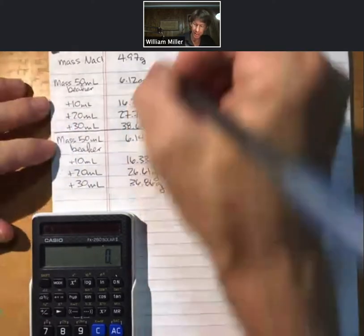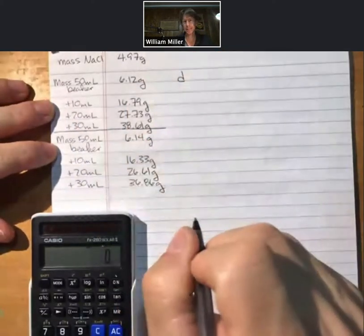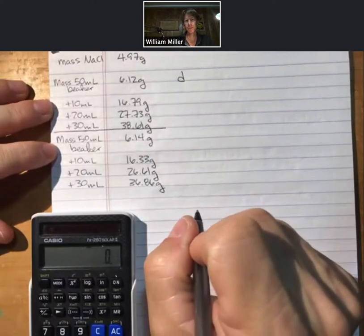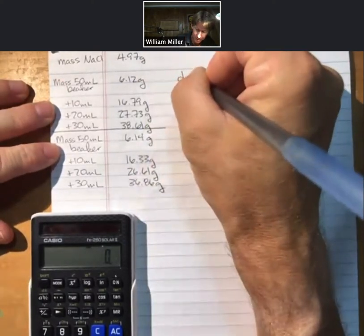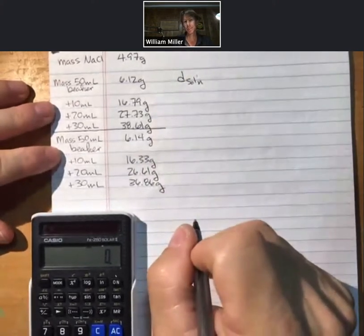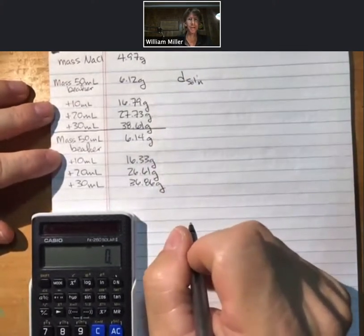Density, like always, is d. Here I'm going to use the subscript soln for solution. The density of our solution is the mass of our solution divided by the volume.